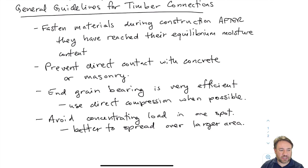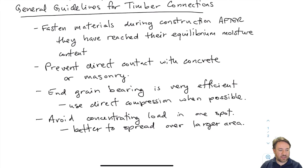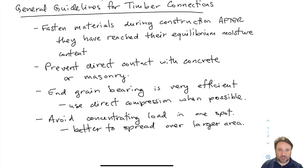We can run into a problem if we bring material to site, store it outside, and it gets wet from rain. The material is required to arrive under a certain moisture content, but then it sits out and gets wet. When we go to install the connections in that wet condition, and the material later dries, it will experience significant shrinkage relative to when it was installed — and we could develop cracks that cause problems for connection strength.